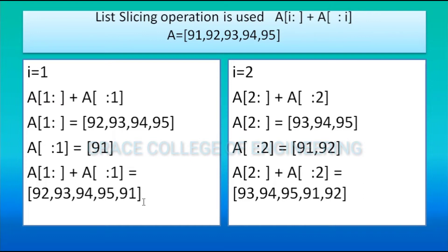For i = 2, the second circulation: a[2:] + a[:2]. First, a[2:] starts from index 2 up to the end of the list — index 0 is 91, index 1 is 92, index 2 is 93 — so from 93 up to last: [93, 94, 95].